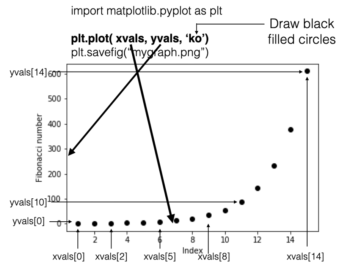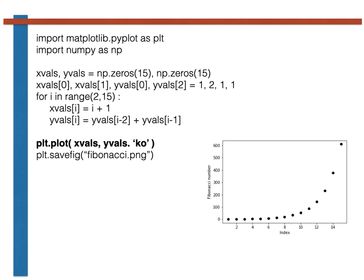With that in mind, let's consider the full program for generating the graph shown on this slide. The graph here shows the first 15 elements in the Fibonacci sequence on the y-axis. The x-values these are plotted at are the positions of these terms in the series. The first x-coordinate is thus 1, the second is 2, the third is 3 and so on.